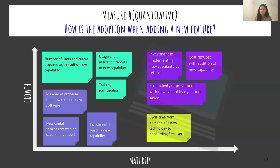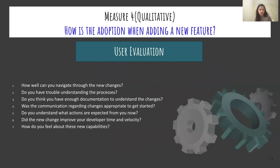For the qualitative side of Measure Four, I ask users: how well can you navigate through the changes? I also gather feedback on documentation and communication, and ask how they feel about the new capability — does it help them do anything better? As you can see, users have been constantly involved throughout the growth and maturity of the entire process.